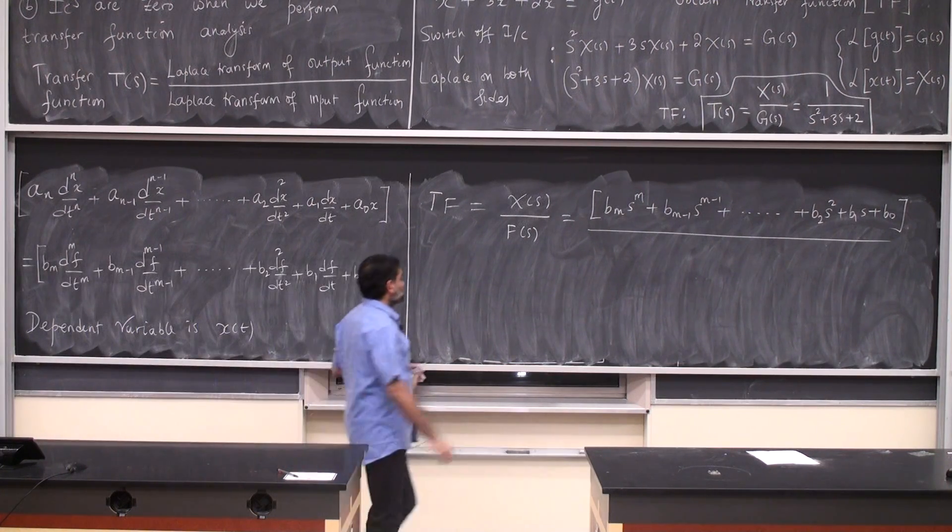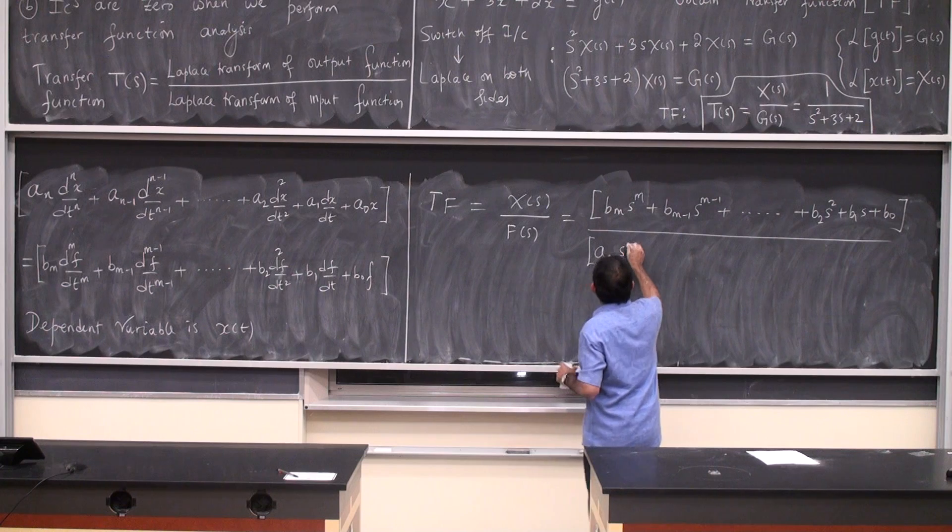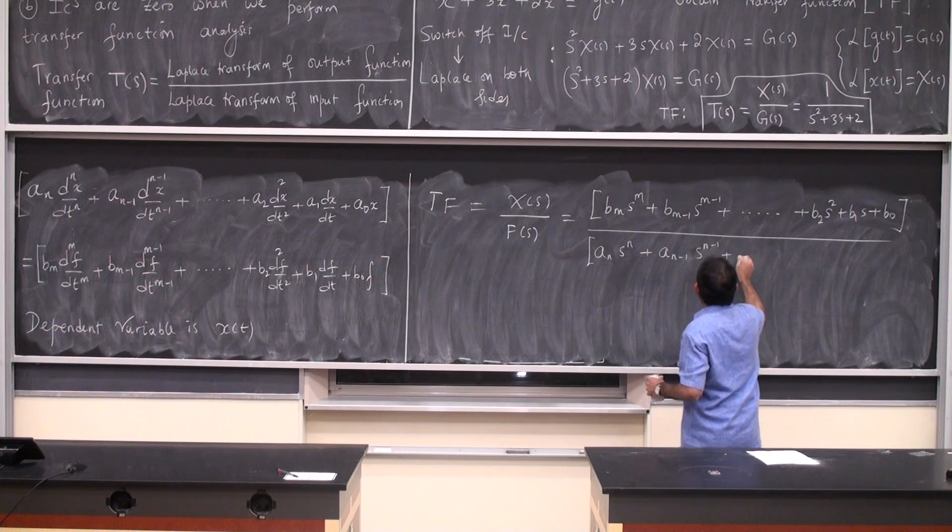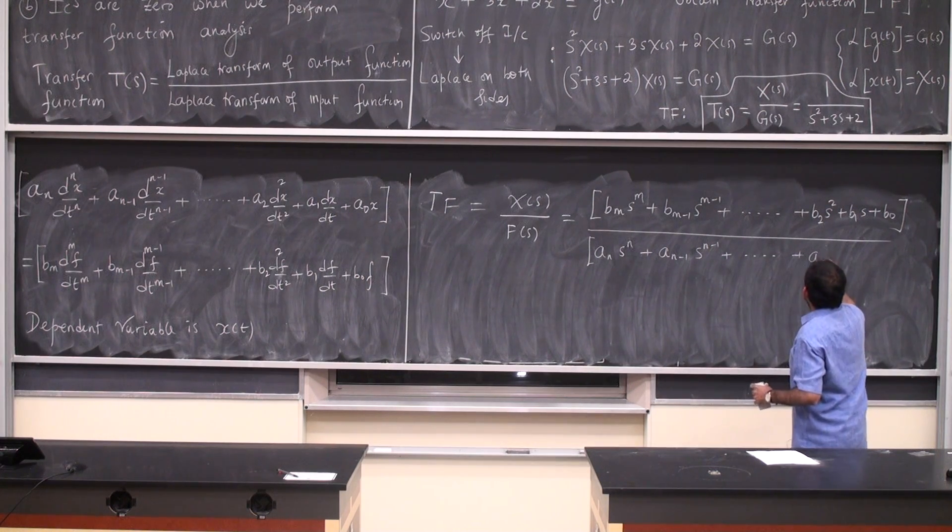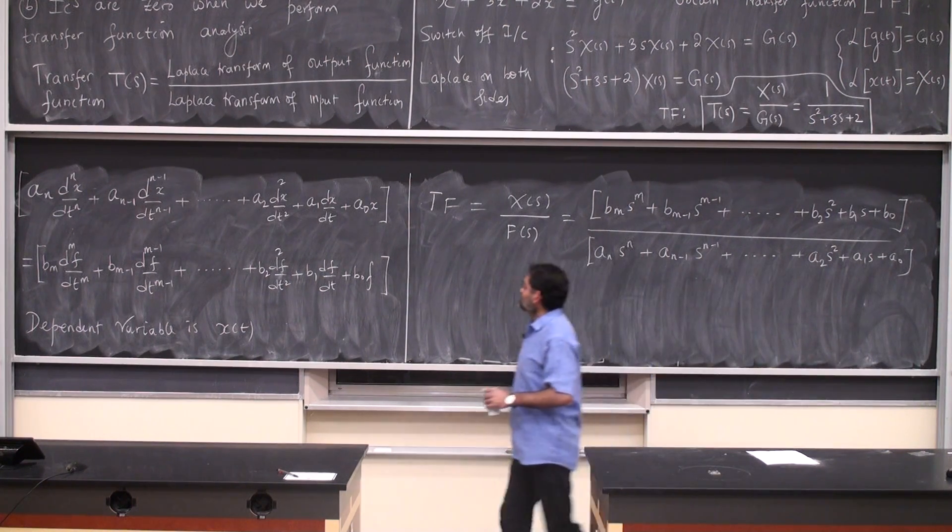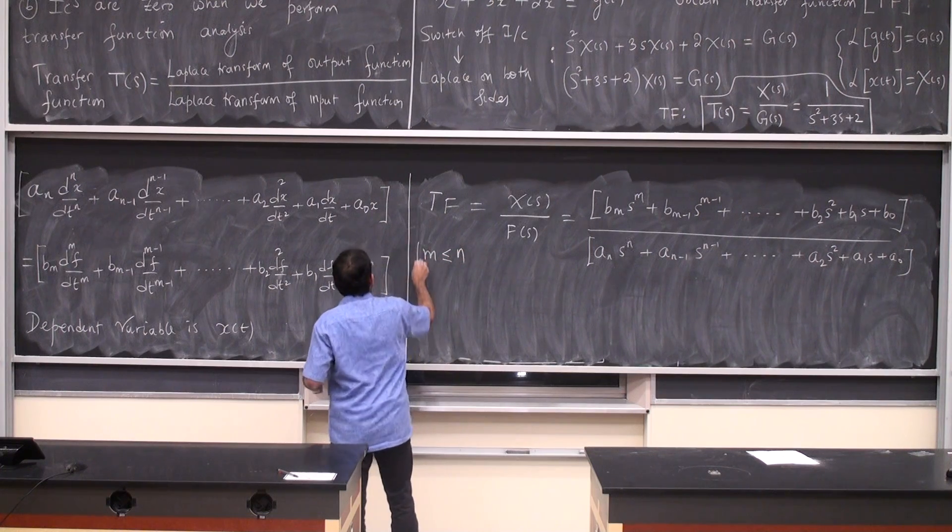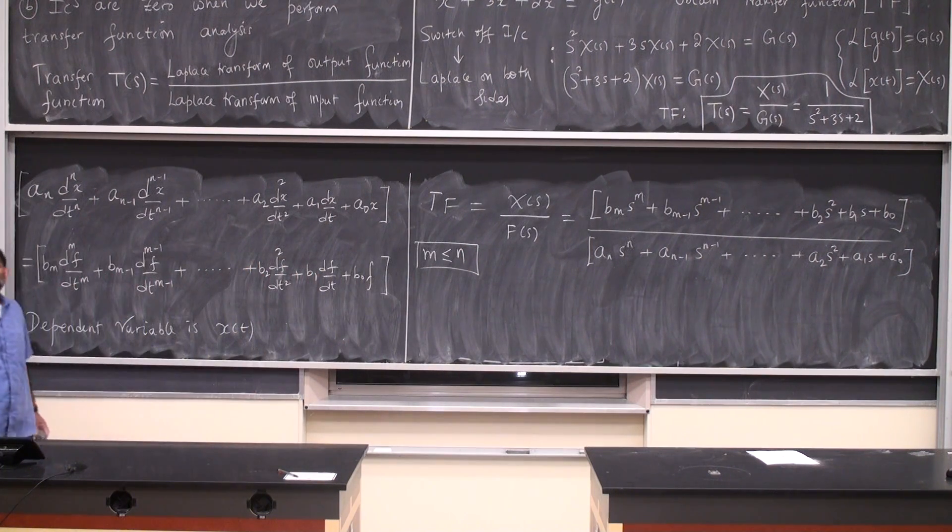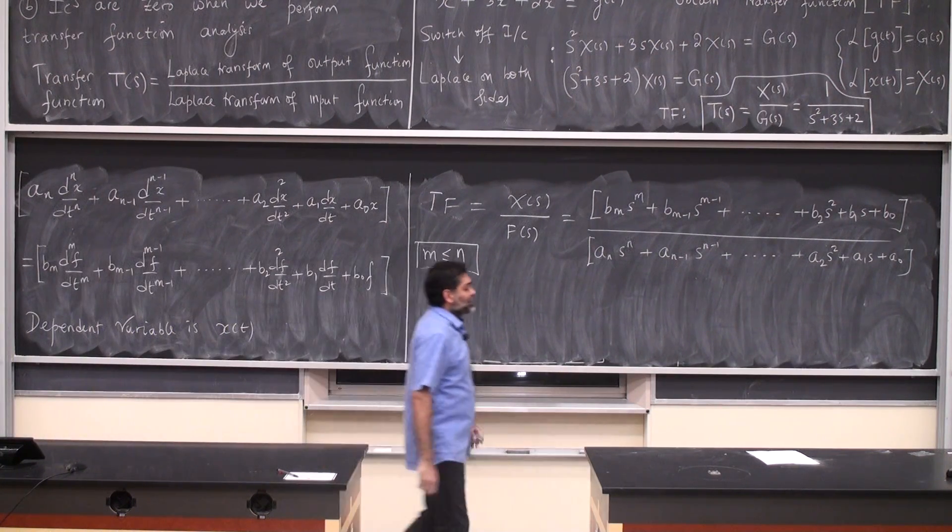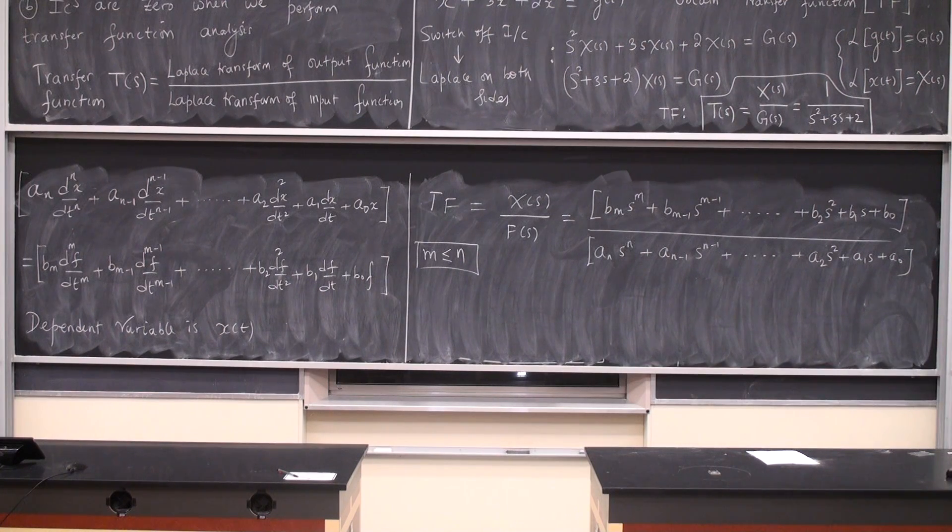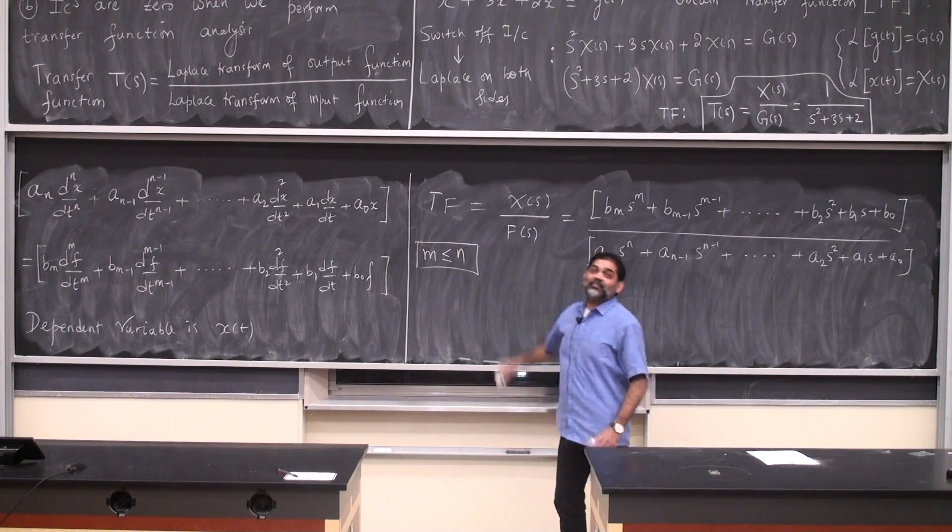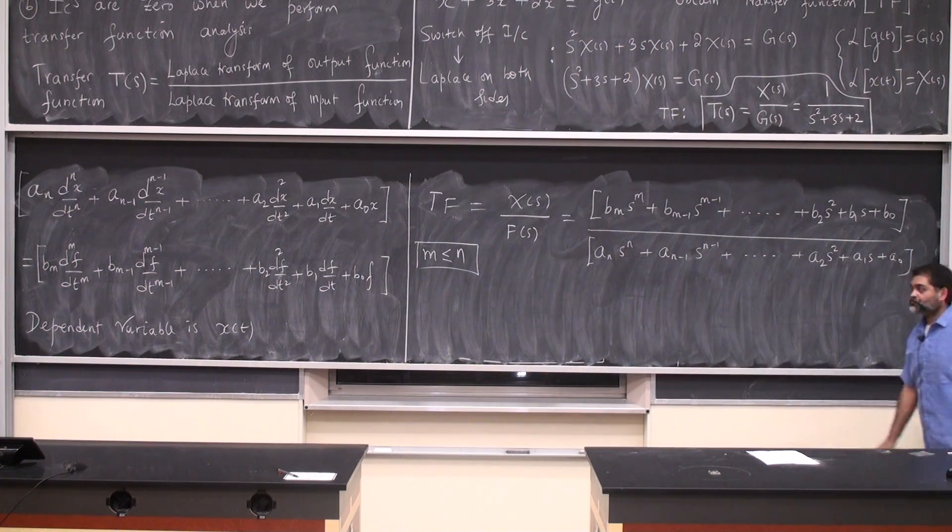So this is a_n s to the power n, a_(n-1), a_2, a_1, a_0, with a big caveat that the order of the forcing function cannot be greater than the order of the ODE. Otherwise we are in uncharted territory as an improper equation. We don't know how to deal with such things. We don't have the wherewithal to deal with such things. So this is a strict restriction or constraint on the system.